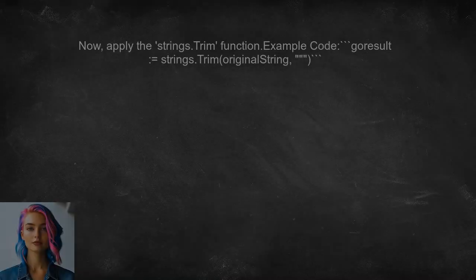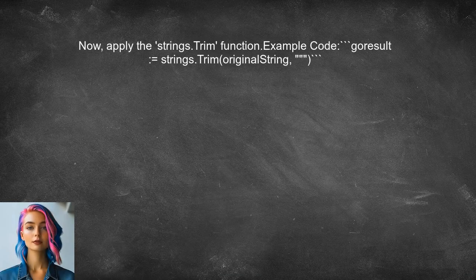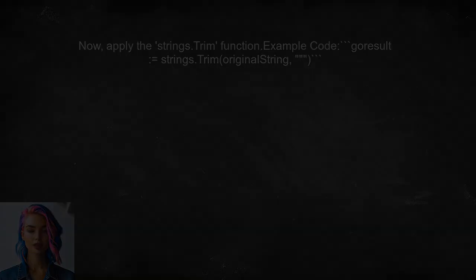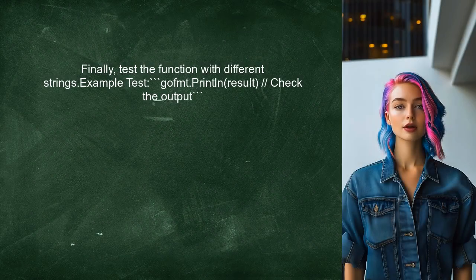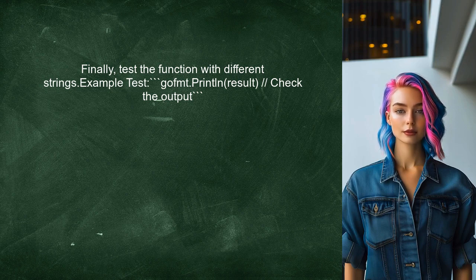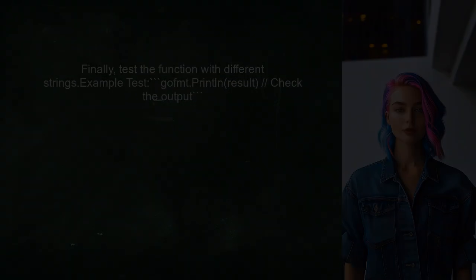Now, apply the strings.Trim function to your string, specifying the quote character as the character to be trimmed from both ends. Finally, test the function with different strings to ensure it works as expected, and print the results to verify that only the outer quotes are removed.